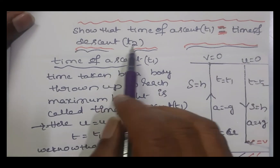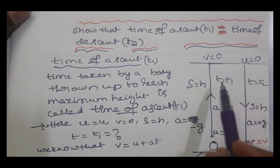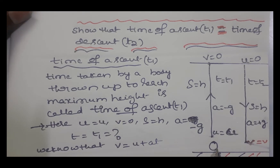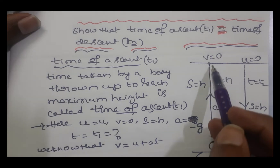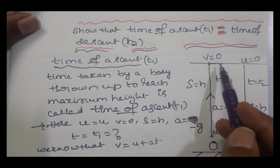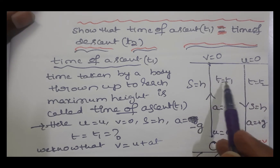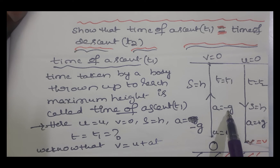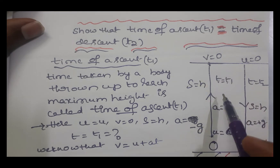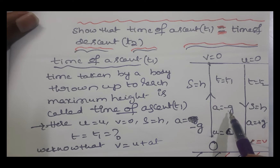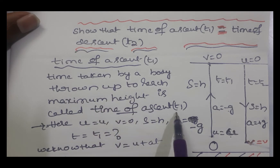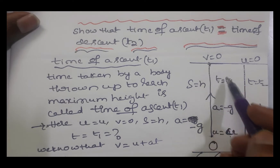Time of ascent is the time taken by a body thrown up to reach maximum height. For example, a body is thrown upward and moves in the upward direction until its final velocity becomes zero — at that point it has reached maximum height. Here, the time taken is t1, which is the time of ascent. Acceleration due to gravity is negative g because gravity acts downwards and the body is moving up, so the rate of change of velocity is decreasing.